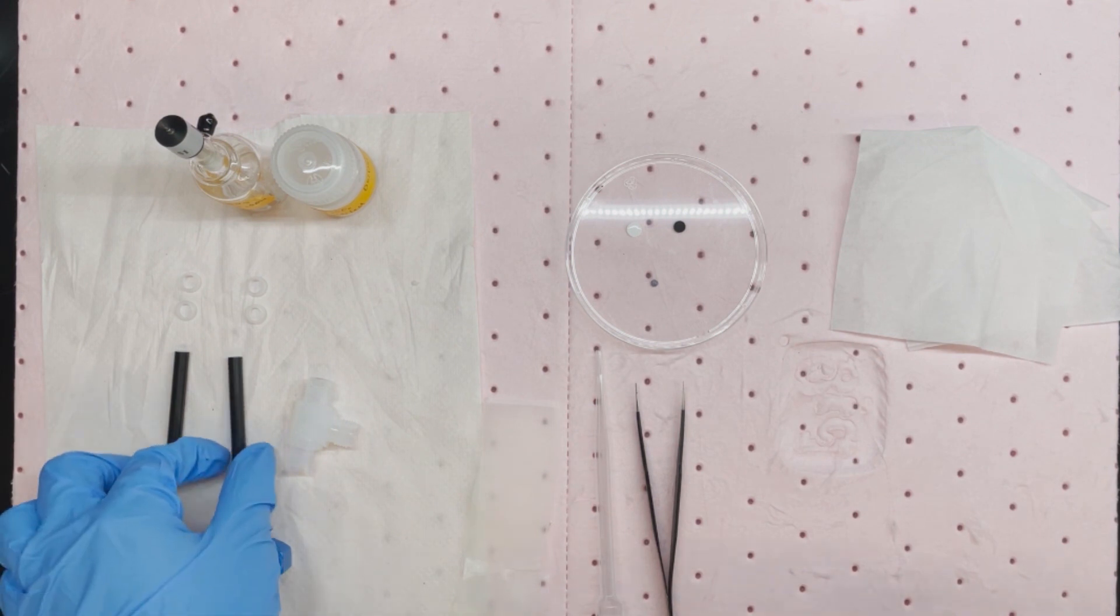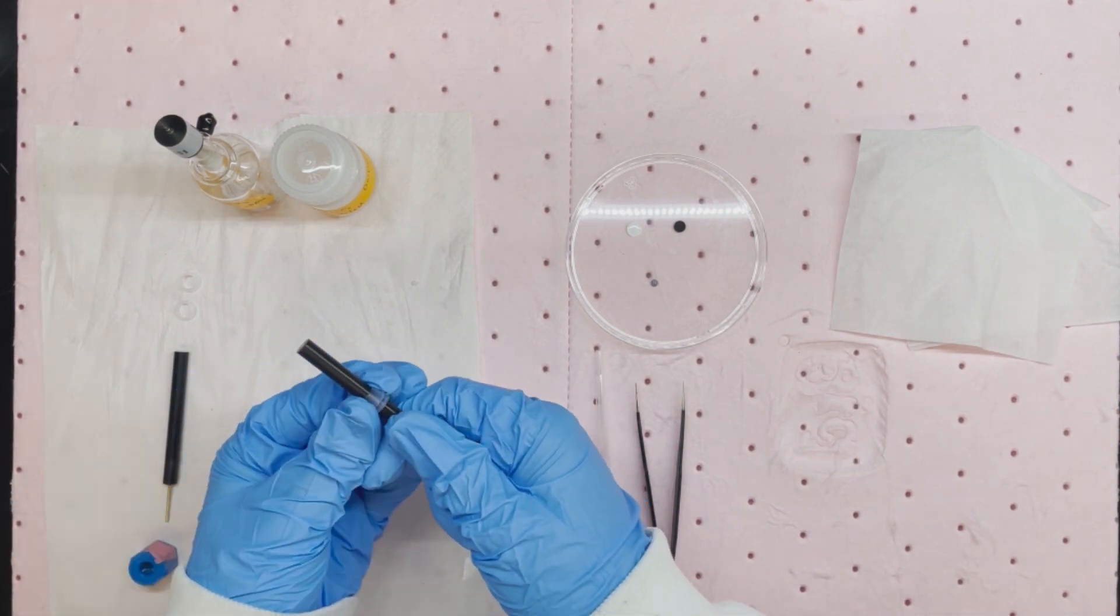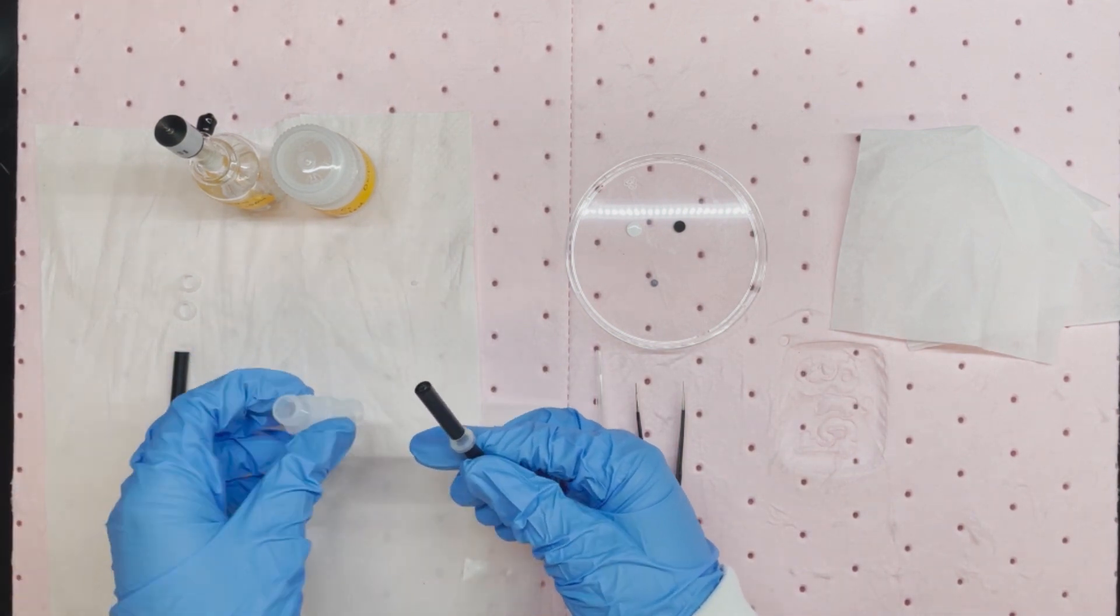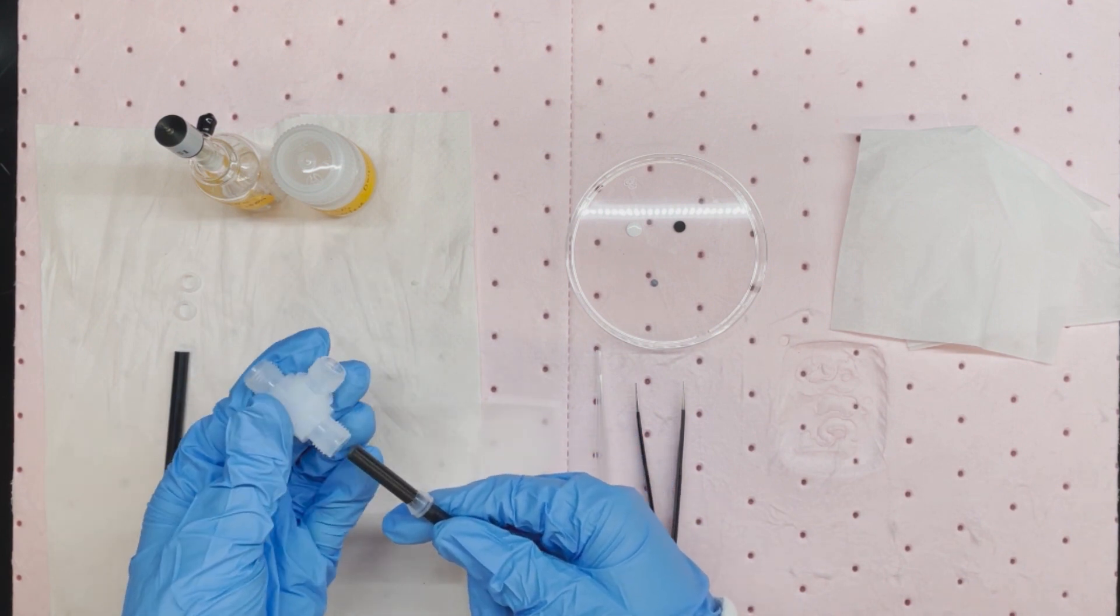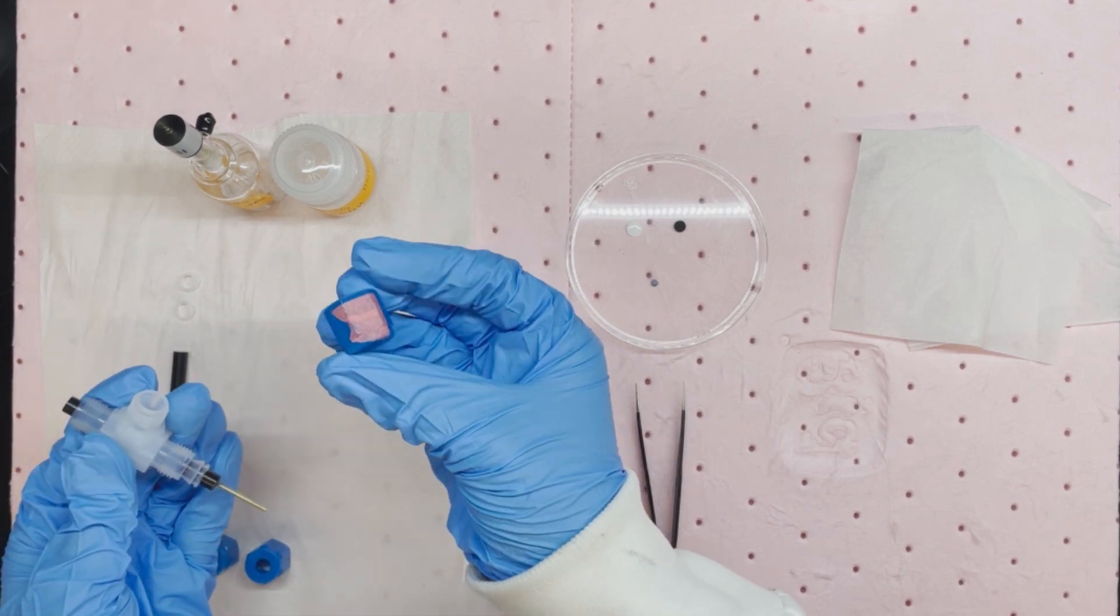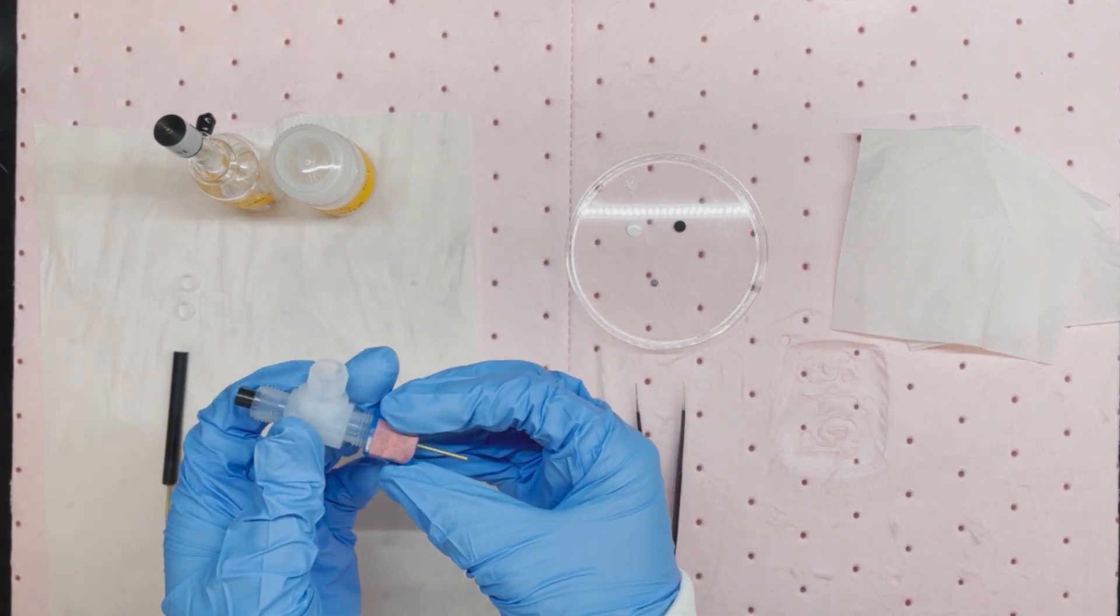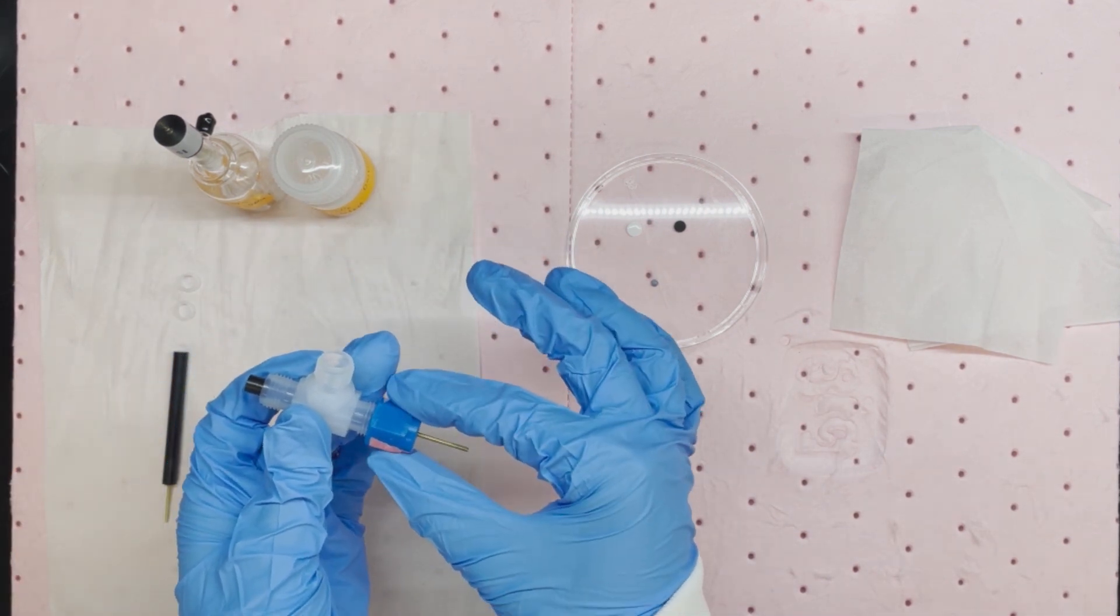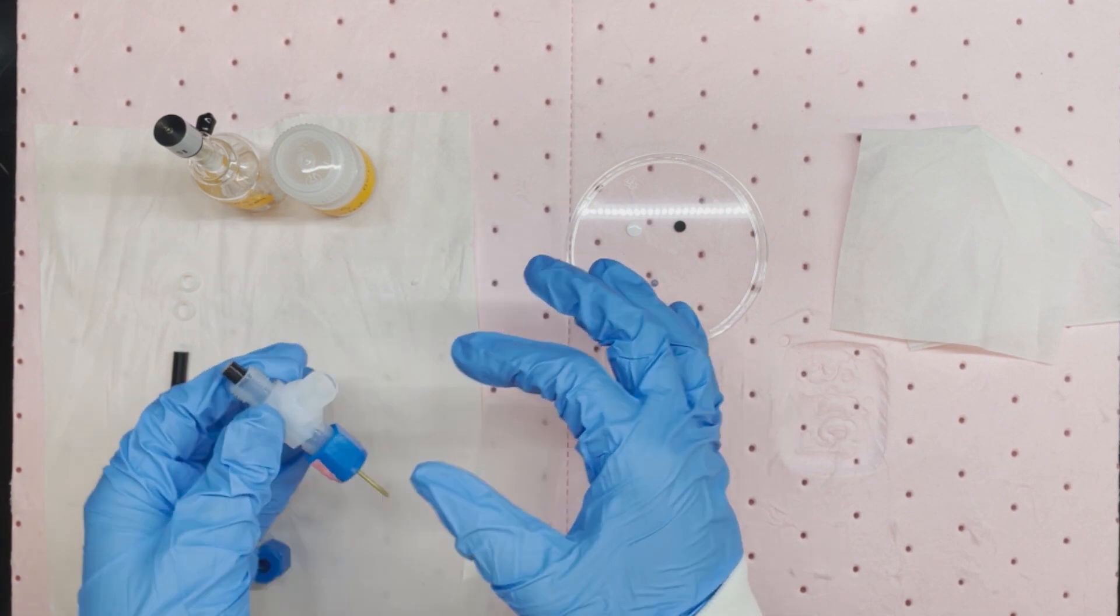To assemble the swagelok cell, we first install a gasket on a glassy carbon electrode and insert the electrode into the swagelok cell body. Make sure the electrode goes through the cell body to assist working electrode placement later on. We loosely screw the cap to help fix the electrode in place.